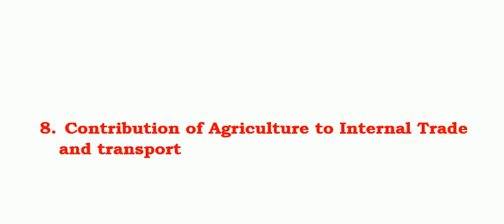Contribution of agriculture to revenue — agricultural taxation is a source of revenue of the state government. Contribution of agriculture to internal trade and transport: India is an agricultural country, and internal trade is more dependent on agriculture. Because trade is mainly in agricultural products, the country's transport system too is dependent on agriculture. Both secure the major portion of their business from the movement of agricultural commodities from the producing to consuming places.